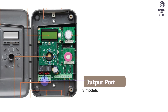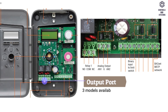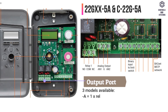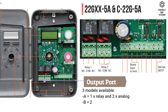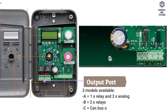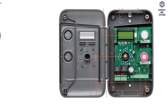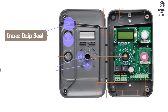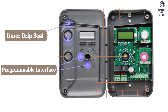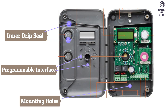This is the output port. It is available in three models: the A model has one relay and two analog outputs; the B model has two relay outputs; the C model has a CANBUS output only. This is the inner drip seal. This is the programmable interface. This is the mounting holes.